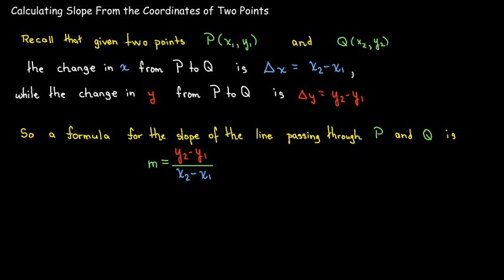So a quick example here. Here I have two points, negative 2 comma 1 and 3 comma 4. Let's calculate the slope of the line that passes through them. So again, I like to label my points, my coordinates. So here I have x1 and y1, x2 and y2. And now I'm just going to substitute those values into the formula and work it out. So 4 minus 1 is 3. Minus and minus will make a plus. So 3 plus 2 is 5. Alright, so here's our formula again.